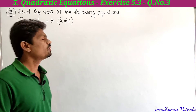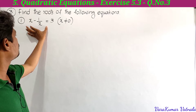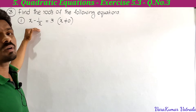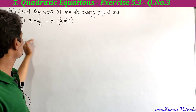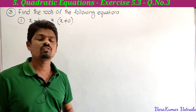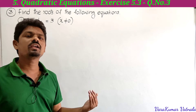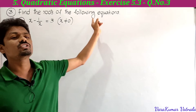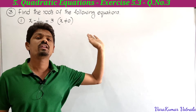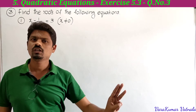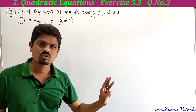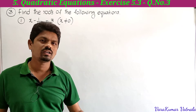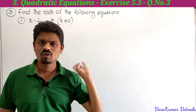He has given x minus 1 by x is equal to 3. This equation is not in the form of a quadratic equation, so first we have to make it into a quadratic equation by simplifying it. He has not mentioned any method to find the roots, but we have three methods: factorization method, completing the square method, and using the quadratic formula.